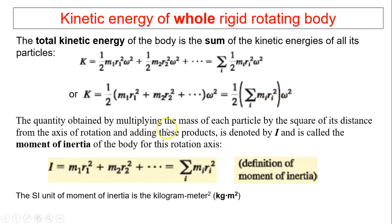The quantity obtained by multiplying the mass of each particle by the square of its distance from the axis of rotation and adding this product is denoted by I, and this quantity is called the moment of inertia of the body for this rotation axis. So I is the sum of all the particles added together: m1 r1 squared plus m2 r2 squared, and so forth. This is the definition of moment of inertia. The SI unit for moment of inertia is kilogram-meter squared.